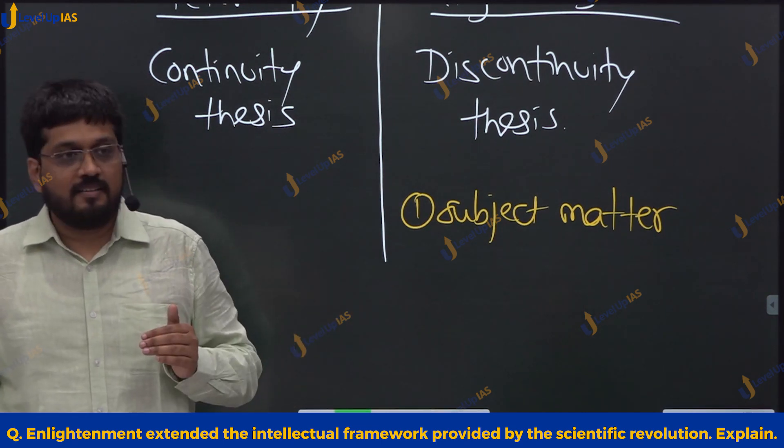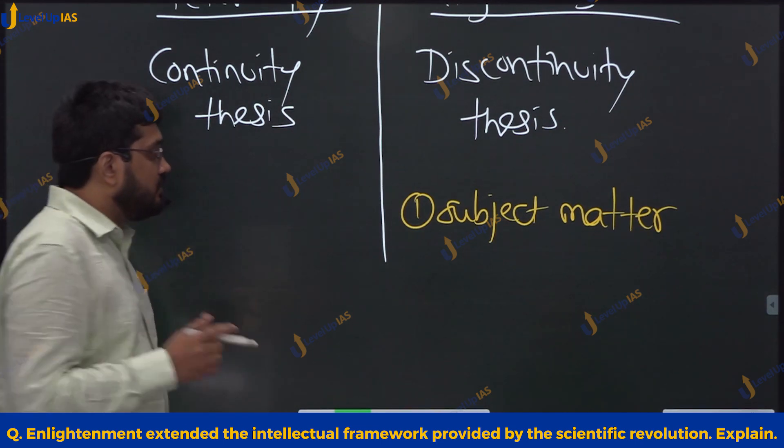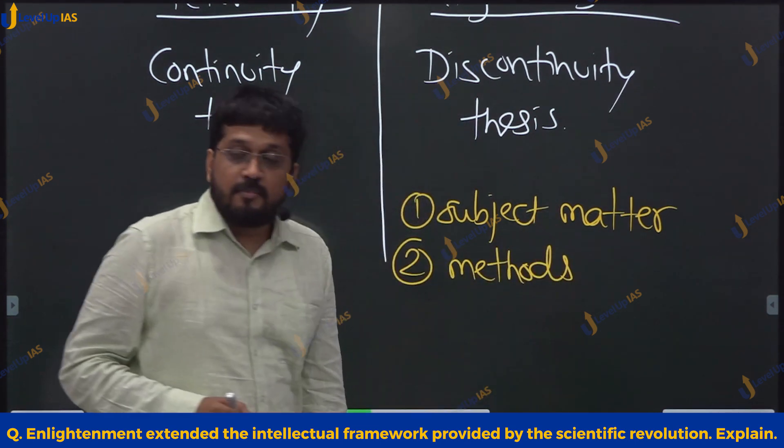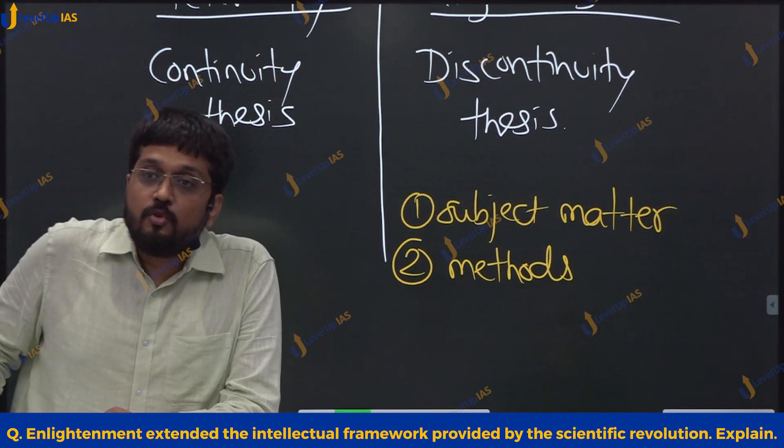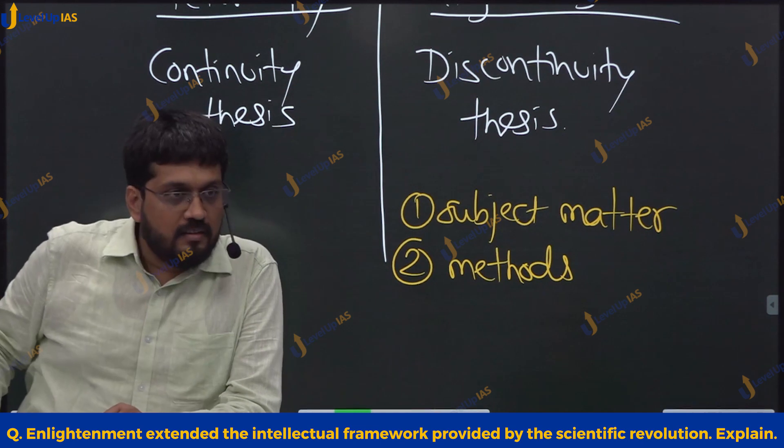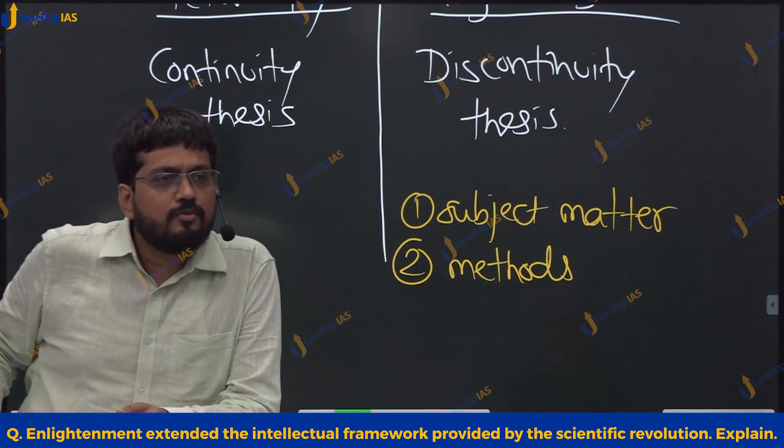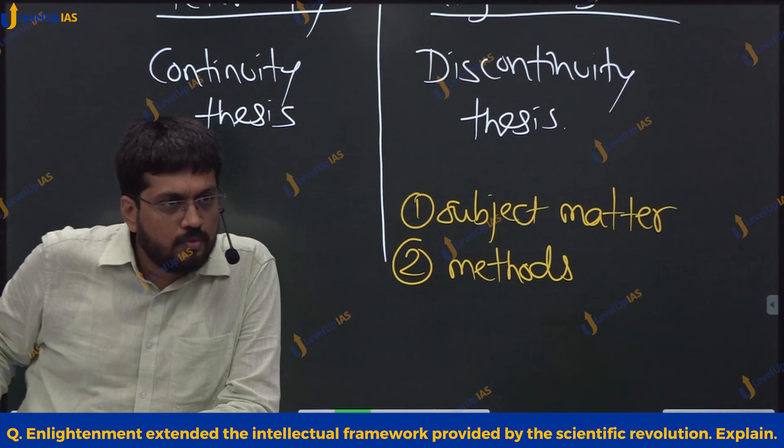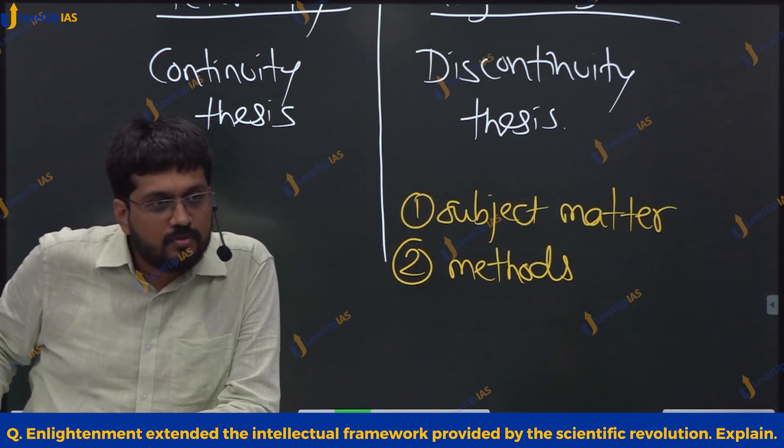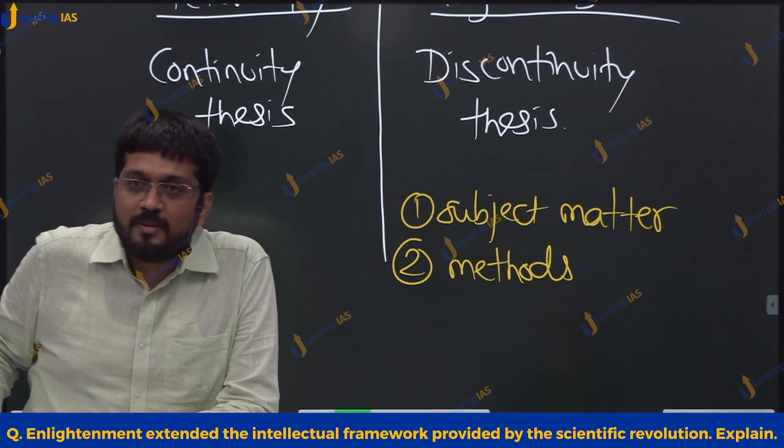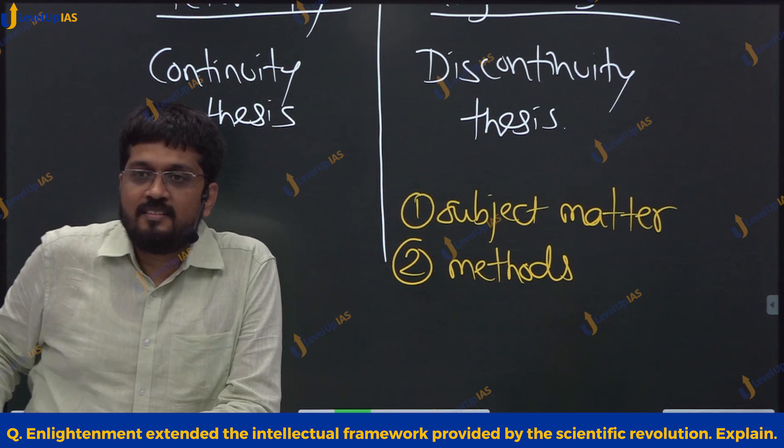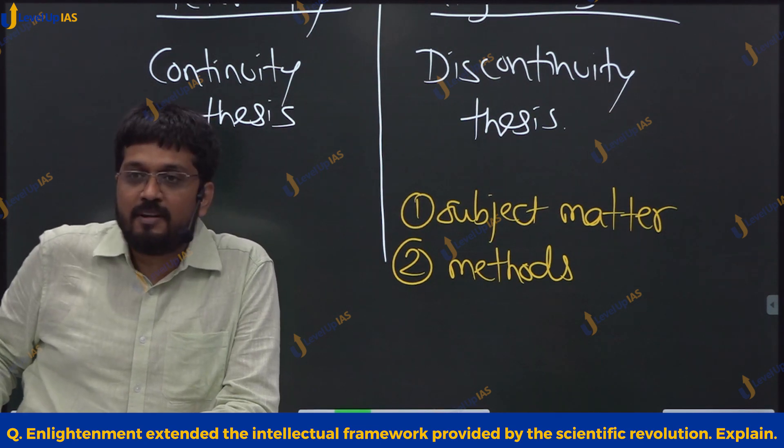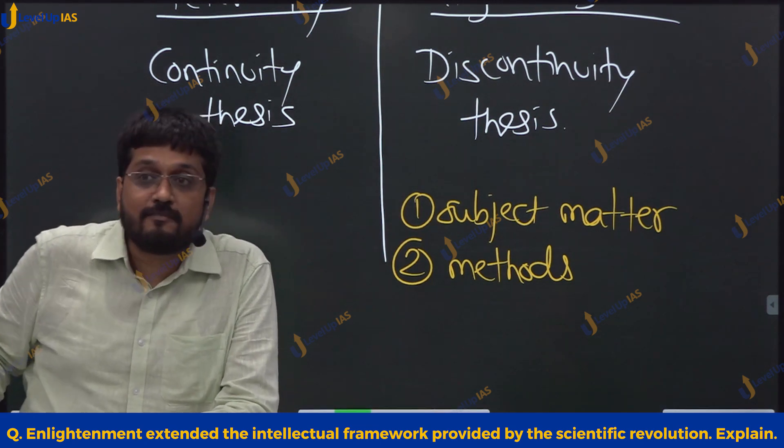The second thing is the methods. The methods that are used by the enlightenment philosophers are not necessarily only restricted to those which are developed by the framework of earlier revolution, scientific revolution. Think of Rousseau's state of nature, Rousseau's social contract. Is it rational? Completely? No. Is it based on some empirical evidence? No. It is his mind. So the point is that lots of things that happened in enlightenment did not necessarily use the methods of inquiry developed by scientific revolution.